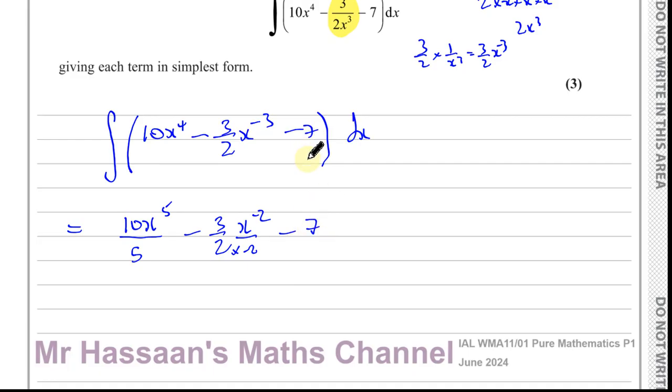When you have a constant term, it just gains an x. Remember, differentiating and integrating are reversed. If you differentiate 7x, you get 7. If you integrate 7, you get 7x. It gains an x. You can think of it as 7 is the same as 7x to the power of 0. When you integrate that, you get 7x to the power of 1 over 1.